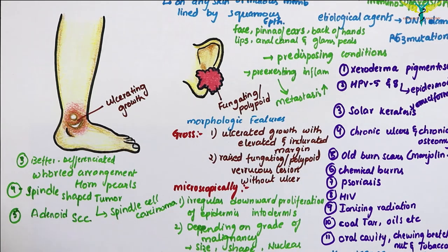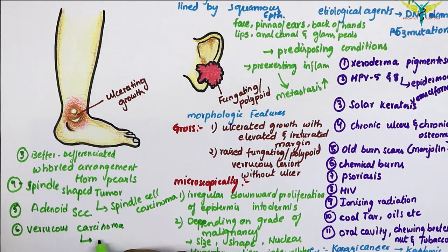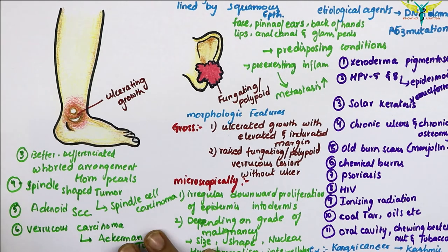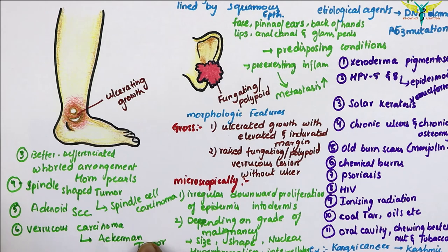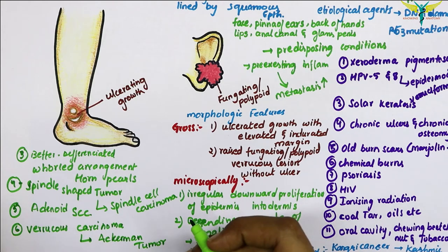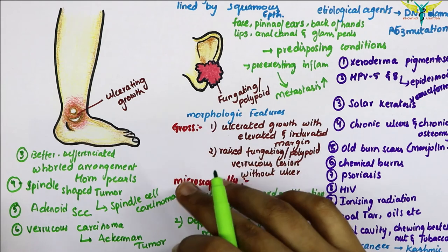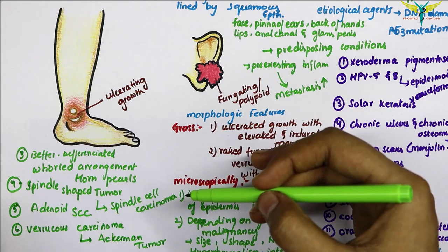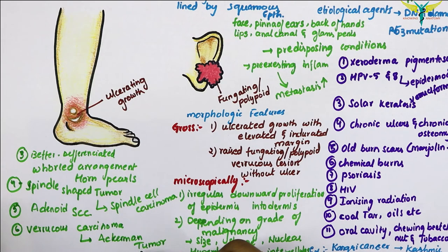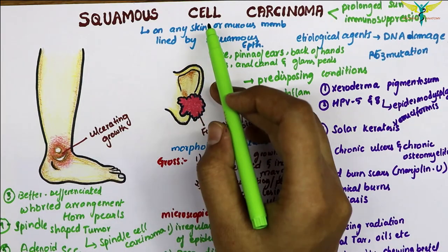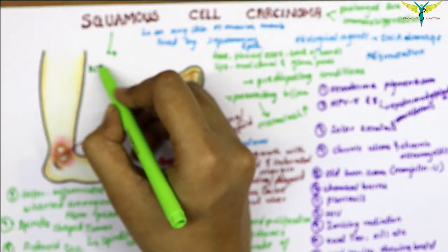Adenoid changes may be seen in some portions of squamous cell carcinoma, called adenoid squamous cell carcinoma. The verrucous carcinoma, also called Ackerman tumor, is a low-grade variant mostly located in the oral cavity. The superficial portion resembles a verruca with hyperkeratosis, parakeratosis, and acanthosis, and it differs from squamous cell carcinoma by its downward proliferation of cells and a lack of significant cellular atypia.